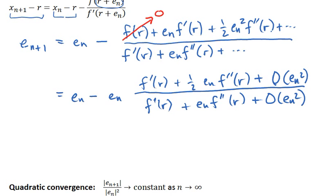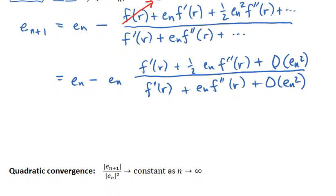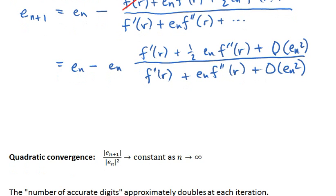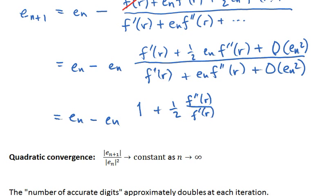So now I'm going to take this fraction and multiply numerator and denominator by one over f'(r). So I get e_n minus e_n times one plus one-half f''(r) over f'(r) times e_n, and then the next term.